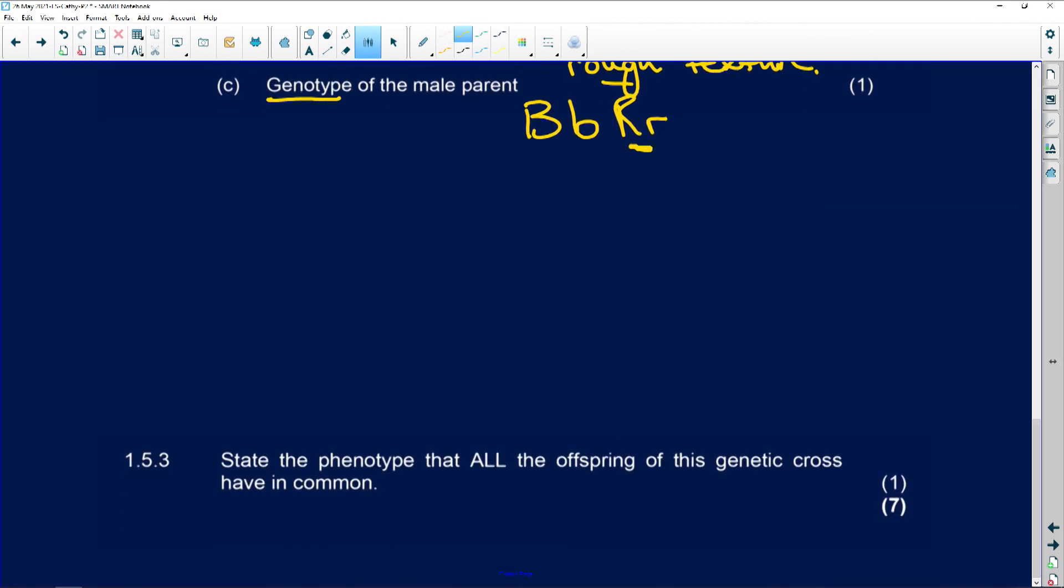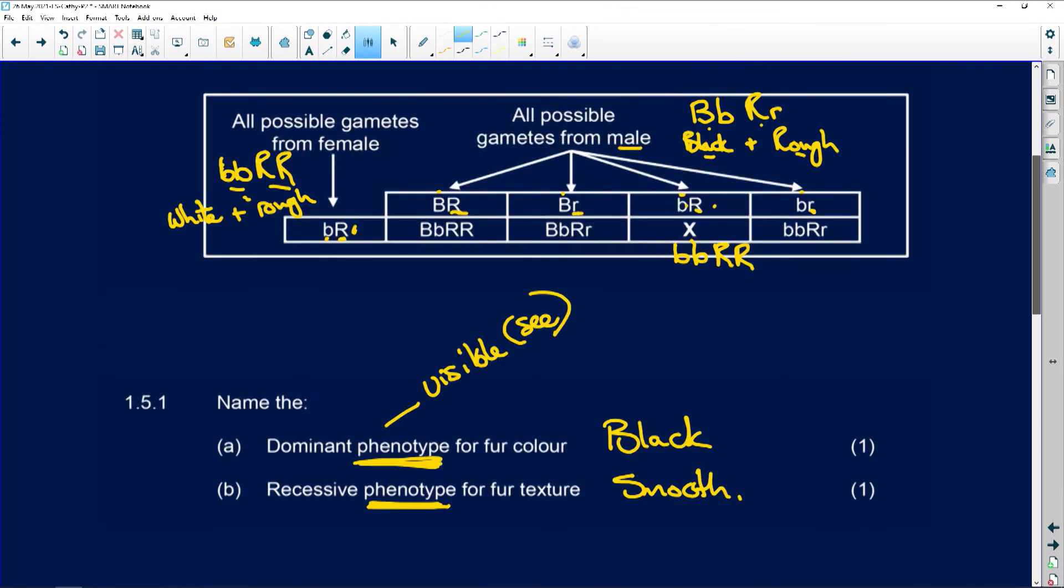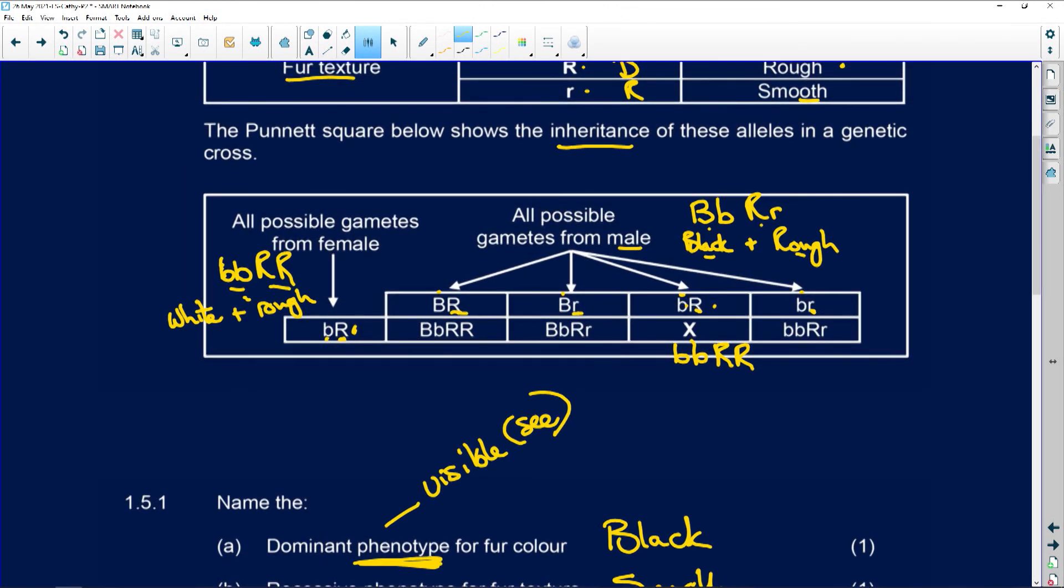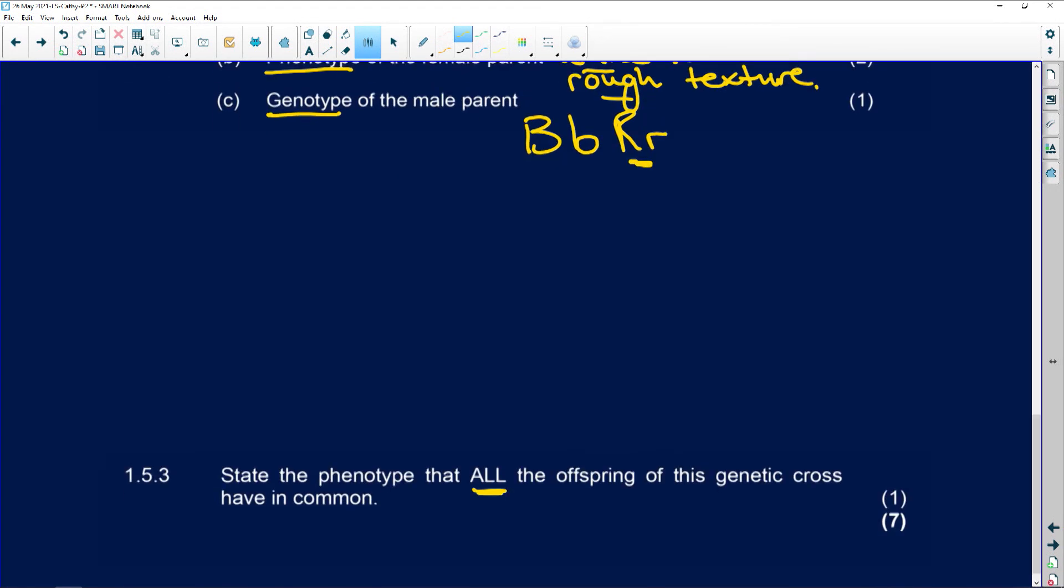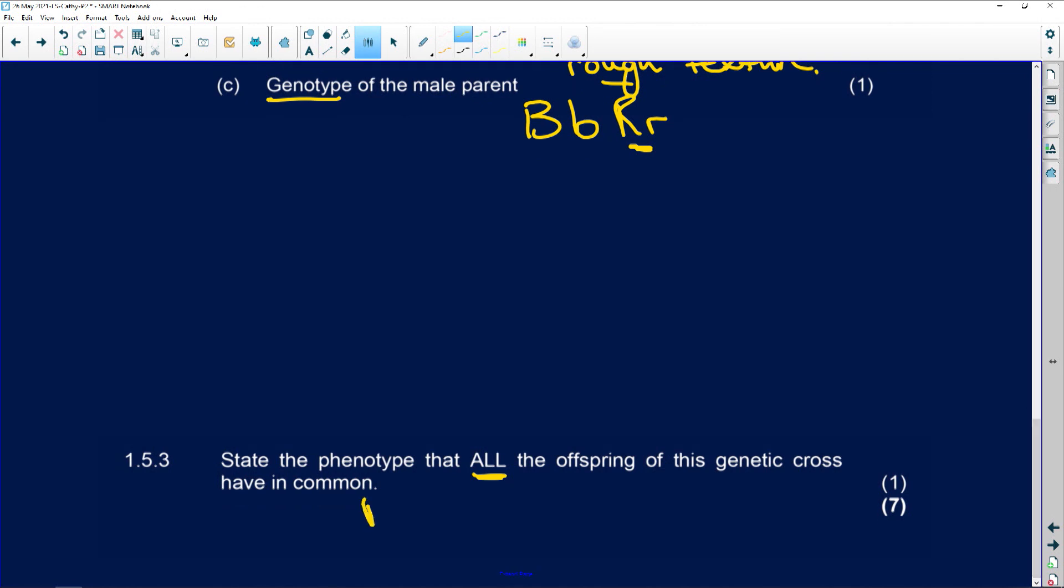State the phenotype that all the offspring of this genetic cross have in common. So what would they all have in common? Let's have a look. So there's a heterozygous B, heterozygous B. This is homozygous B and homozygous B, so that's not in common. That's going to be rough fur. This is rough fur, this is rough fur, and this is rough fur. So that's a rough texture would be what they all have in common, would be a rough fur texture. Why? They all had the capital R.